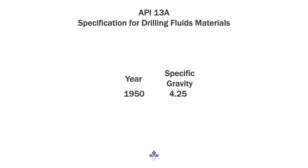The first API specification for Barite in 1950 actually had three specifications which included a specific gravity of 4.25. In 1958, the specification was lowered to 4.2 SG. In 2010, the specification was further lowered to 4.1 SG.